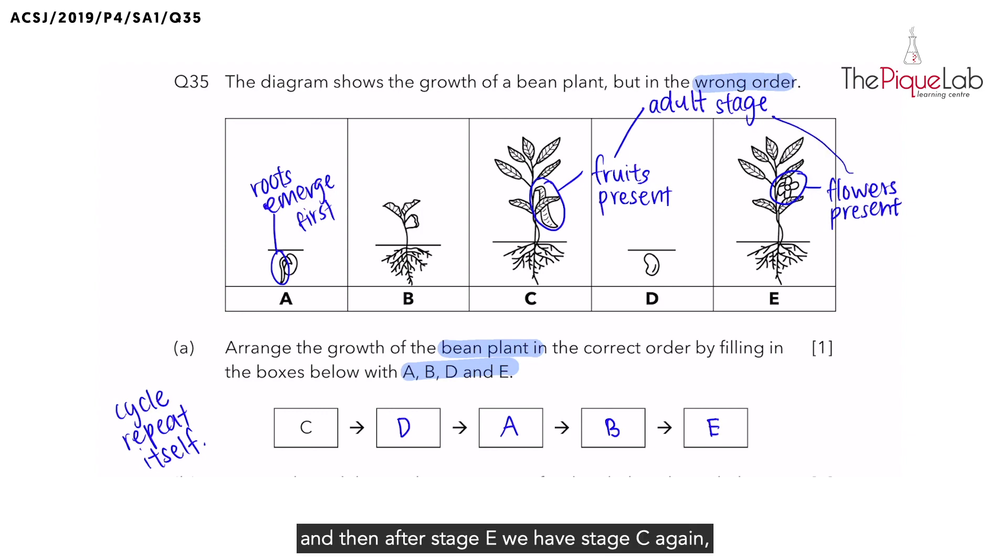And then after stage E, we have stage C again because the flowers will develop into a fruit and the cycle repeats. So this question is testing the students on the concept of a cycle repeating itself over and over again.